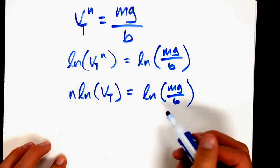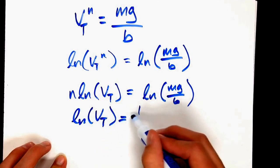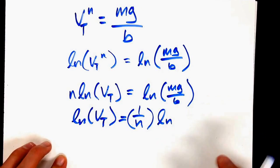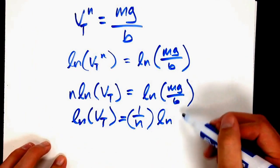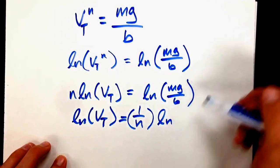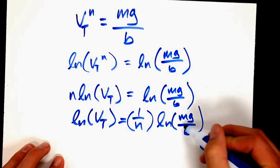Now I can divide by n, giving me natural log of V_T equals one over n times the natural log of mg over b. I could split this into natural log of m plus natural log of g, all divided by natural log of b, but I'll leave it as mg over b for now.